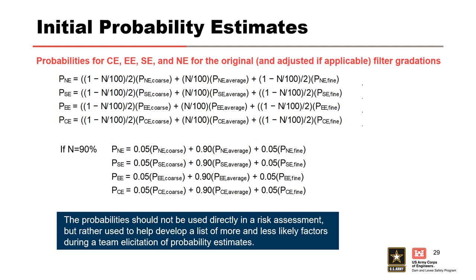Lastly, assess how representative the gradation may or may not be. Use your judgment to adjust the calculated percentages to take into account the effects of other factors such as the distribution of the core and filter gradations in the fill, borrow area variability, and selective placement of materials. The probabilities should not be used directly in a risk assessment, but rather should be used to help develop a list of more and less likely factors during a team elicitation of probability estimates.